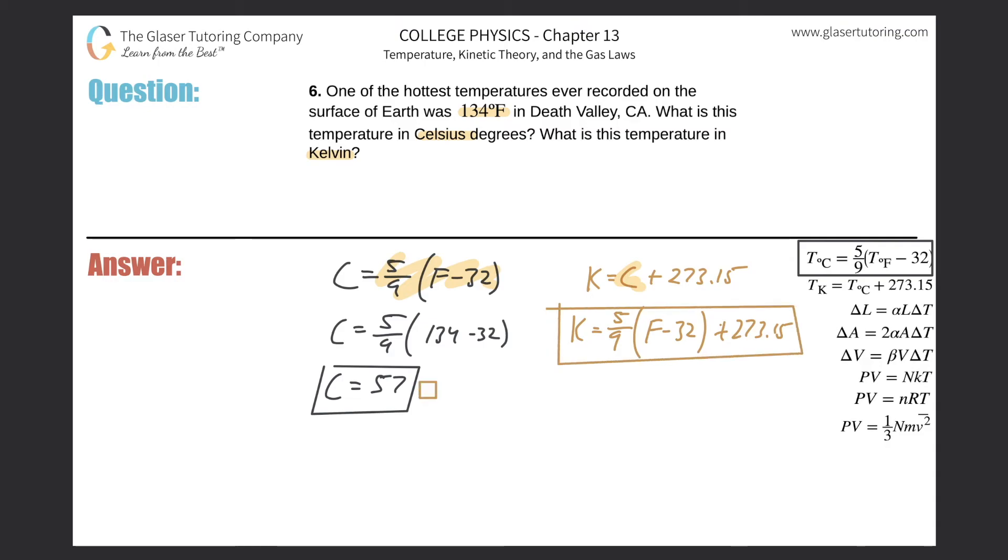You didn't even need to go through all that work. We found the Celsius temperature over here, so we could have just plugged that in if you wanted just to make it faster. In any case, this is going to be five ninths.